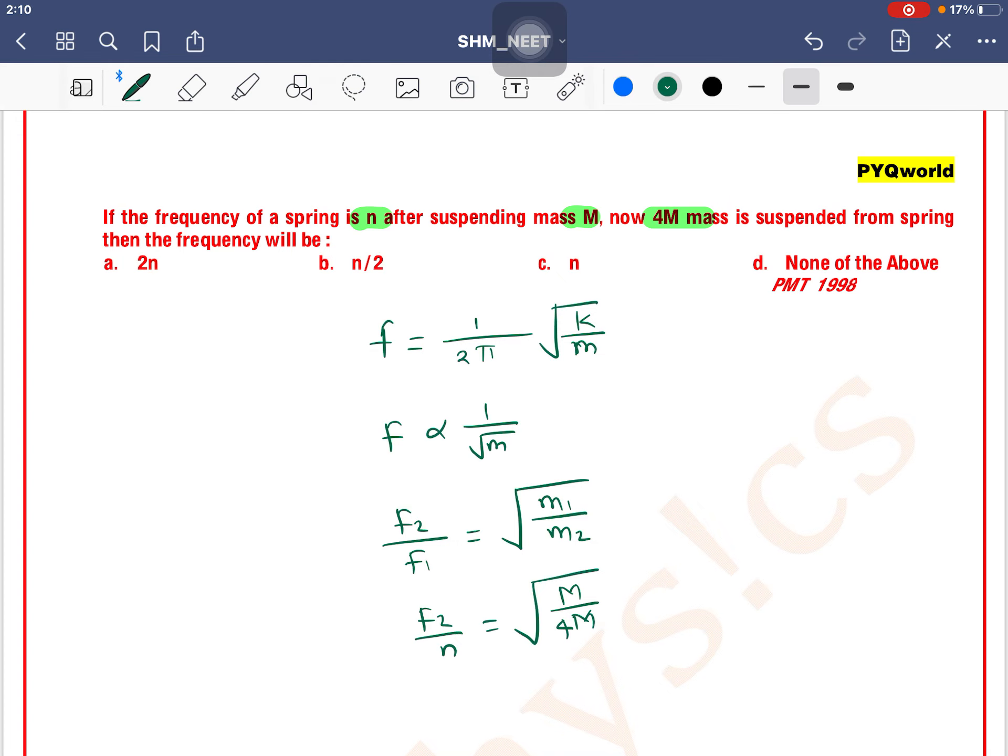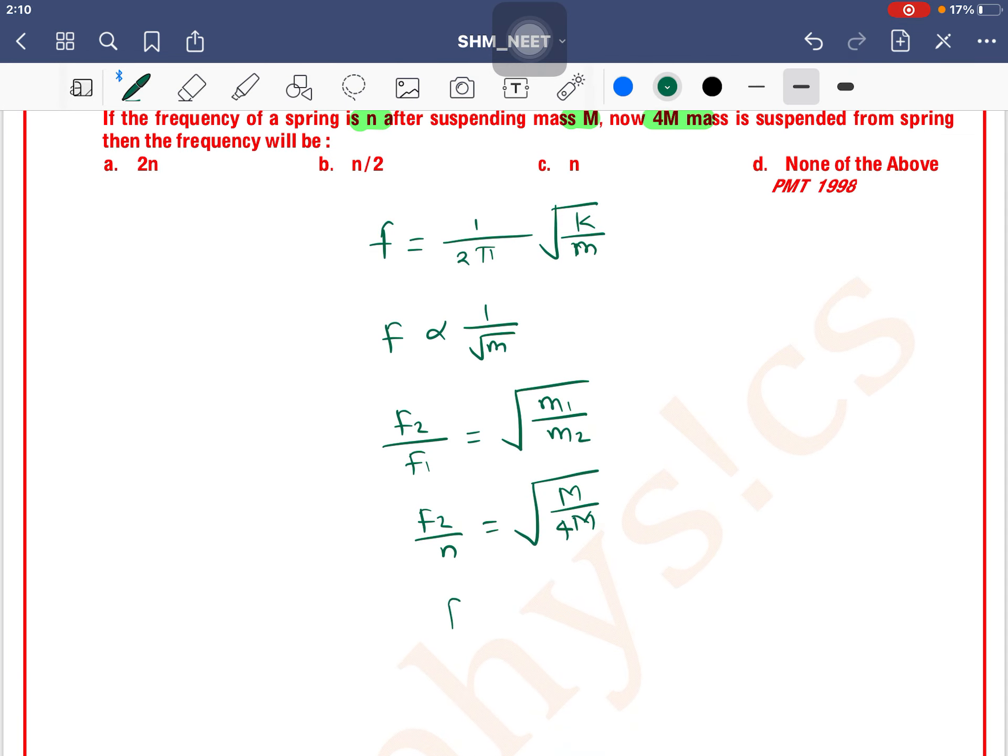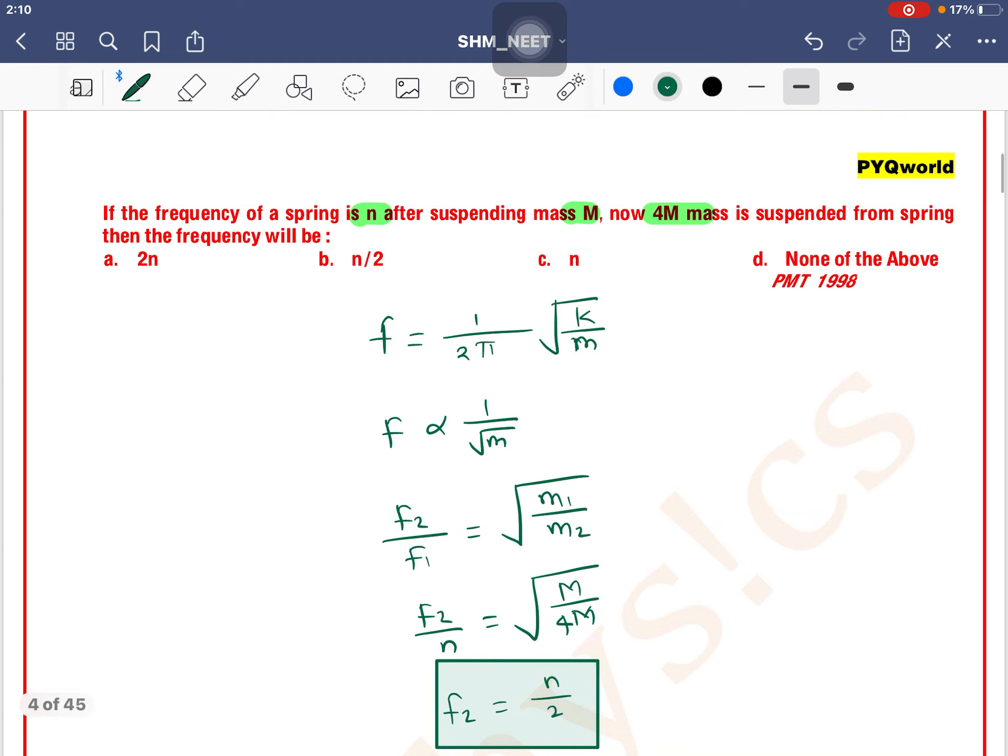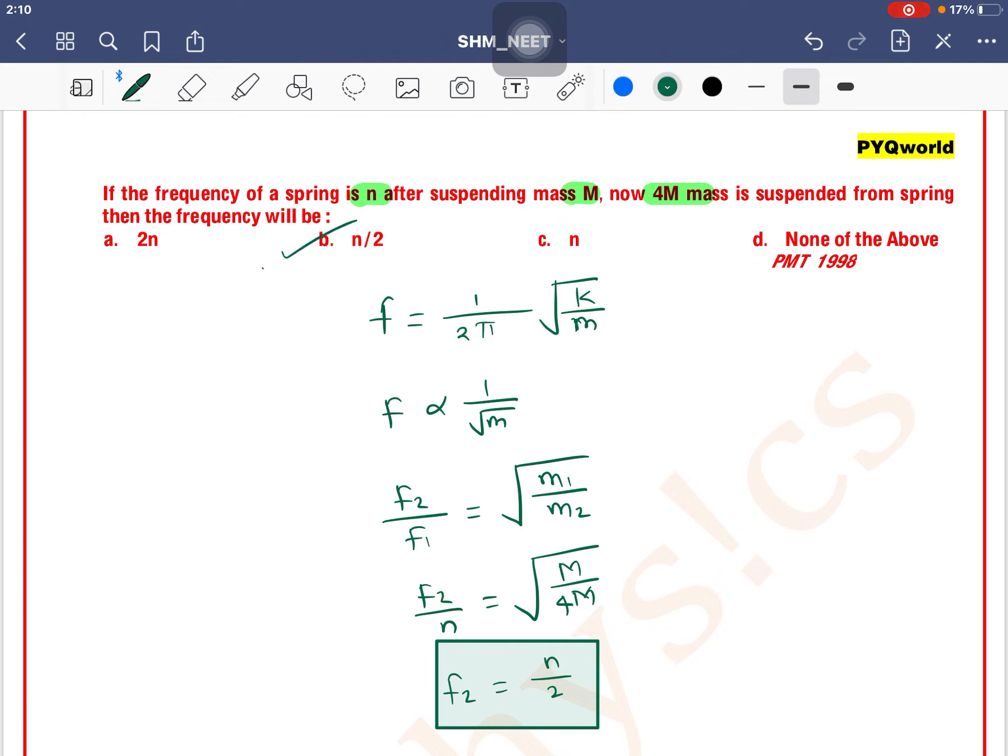by 4m, that equals 1 by 4. The square root of 1 by 4 is 1 by 2, so it will be n by 2. So n by 2 means option b is the correct one.